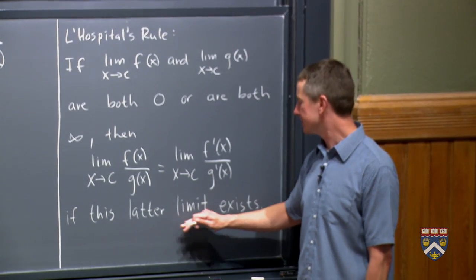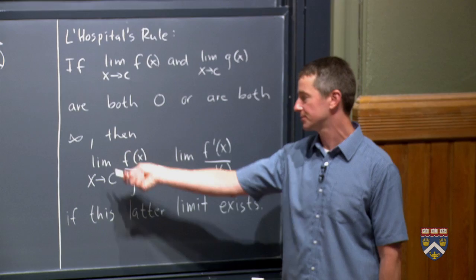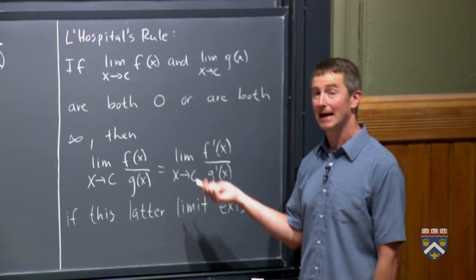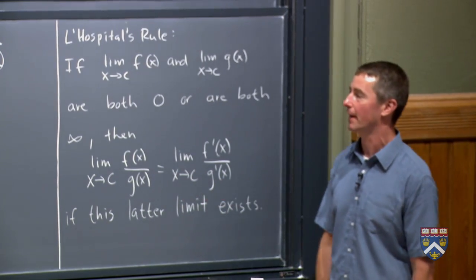And we have to make one special condition: if this latter limit exists. So it's possible for this first limit to exist and this latter limit not to exist, in which case the rule doesn't apply because we can't have them equal in that case.